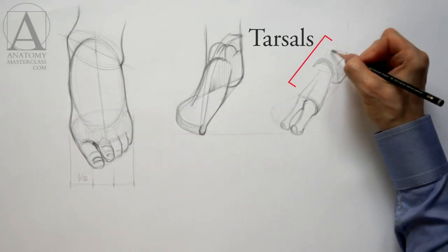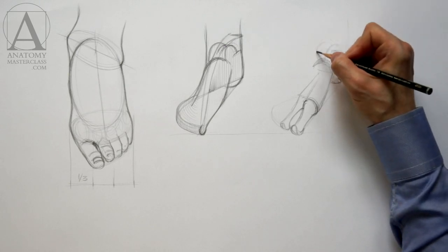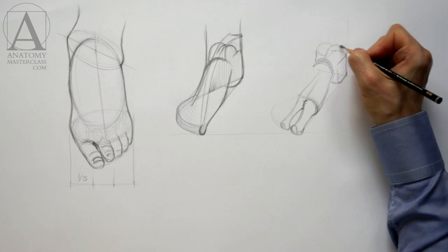The tarsal bones can be compared to the bones of the wrist. I will skip the individual shapes of the seven tarsal bones and will depict them as a united block.